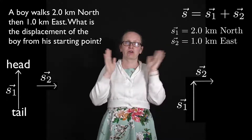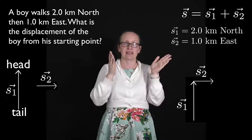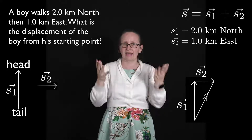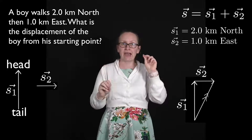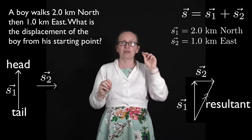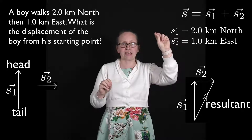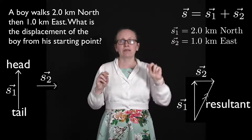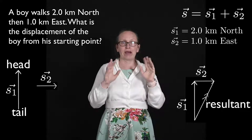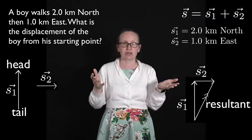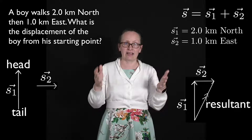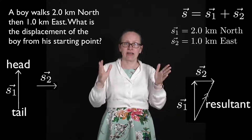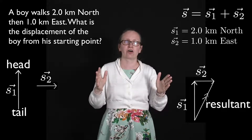So now we've got a diagram like this. The resultant — our answer, our sum — goes from the tail of the first vector to the head of the second vector, so we can draw that on our diagram now. Usually when we draw resultants, we give them a double arrowhead to distinguish them from the other vectors. So now we've got a nice vector diagram showing how to solve this problem.